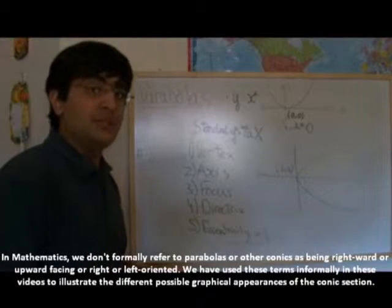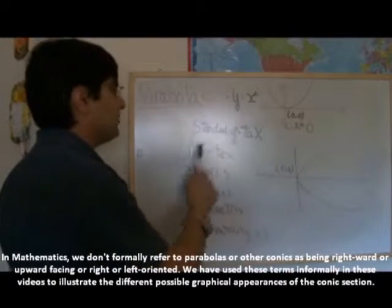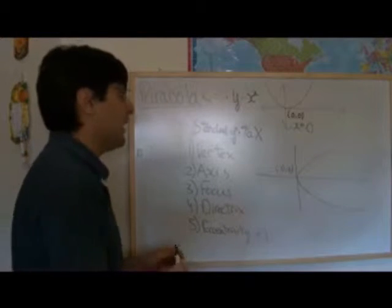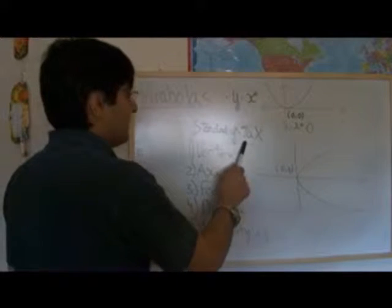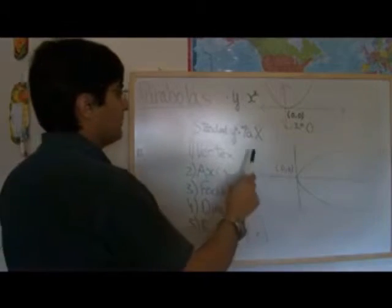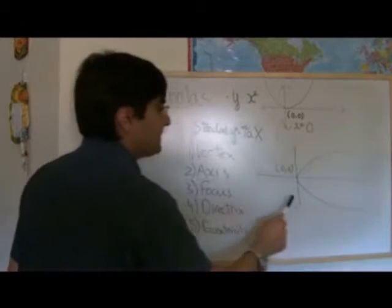You've also recently been introduced to the standard parabola y squared equals 4ax. We're going to look at that now. This parabola refers to a different-oriented parabola to this. The parabola y squared equals 4ax looks like this.